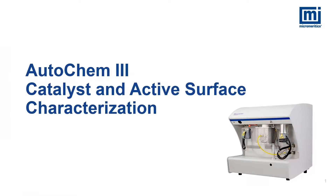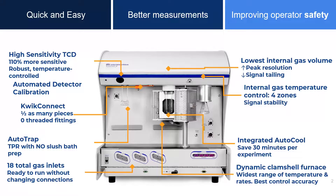In this webinar, we will cover the new features of the AutoChem 3 and talk about the different methods used for characterizing real catalysts. The new AutoChem 3 is faster, easier to use, and has improved operator safety features. The high sensitivity thermal conductivity detector is twice as sensitive as alternatives, making it possible to measure smaller samples and detect secondary reactions.